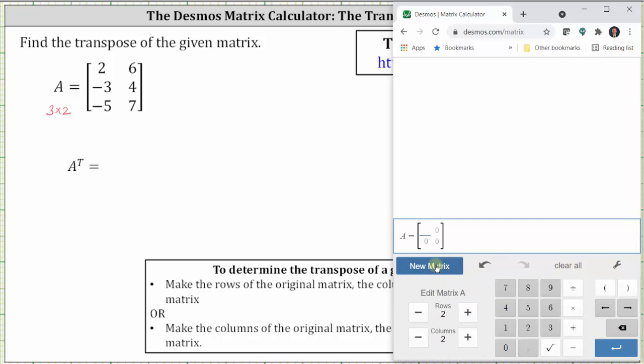Then click new matrix, change dimensions so that we have three rows and two columns.